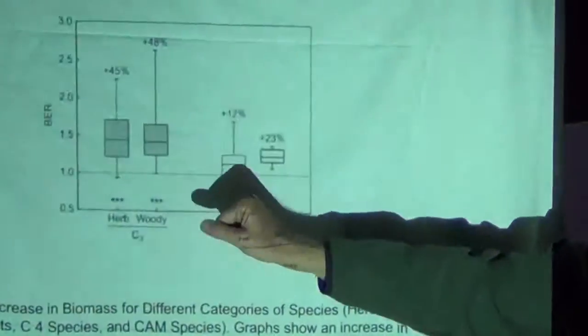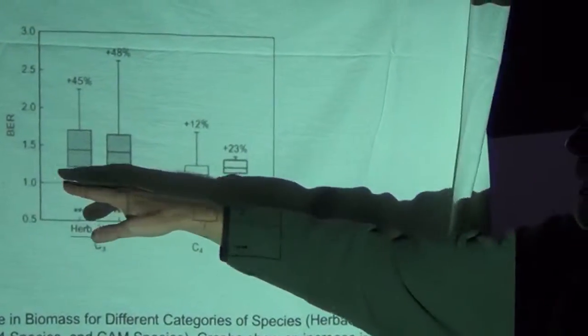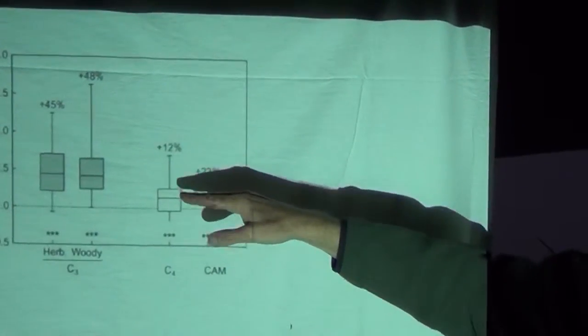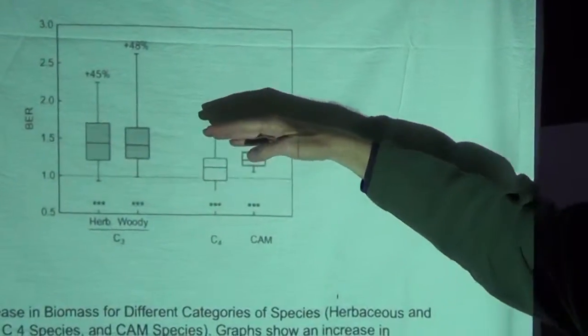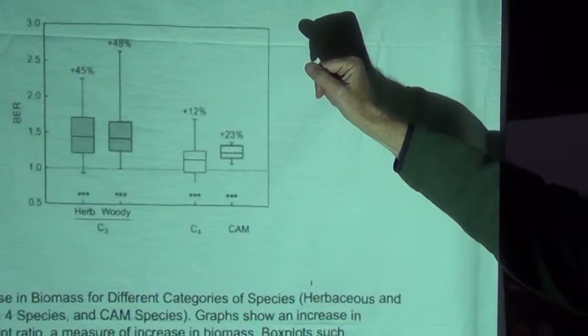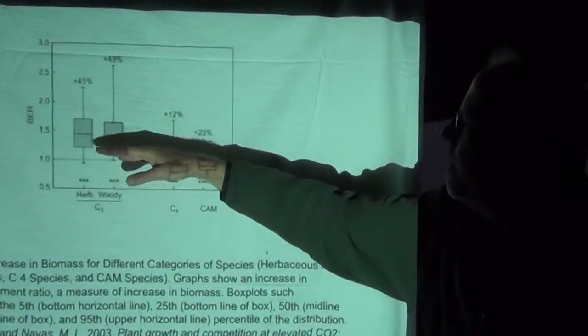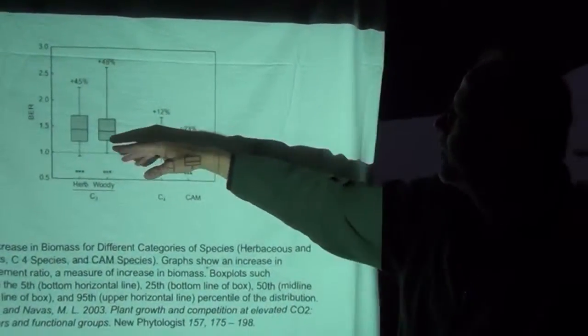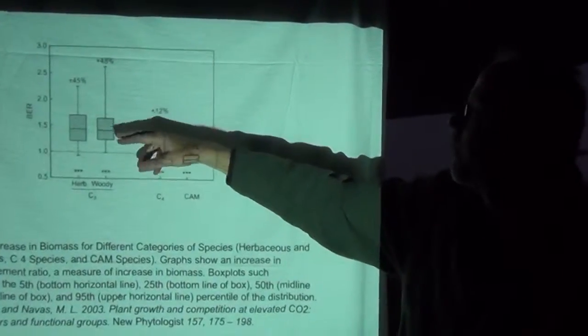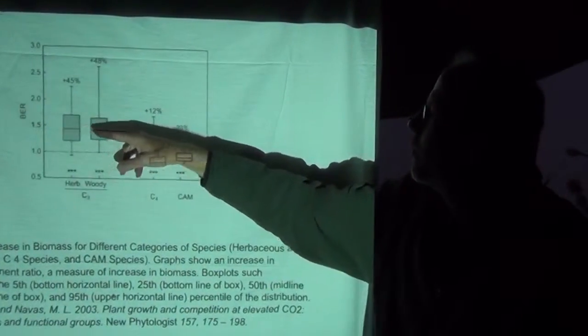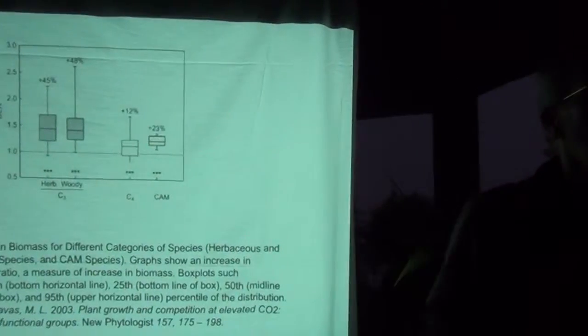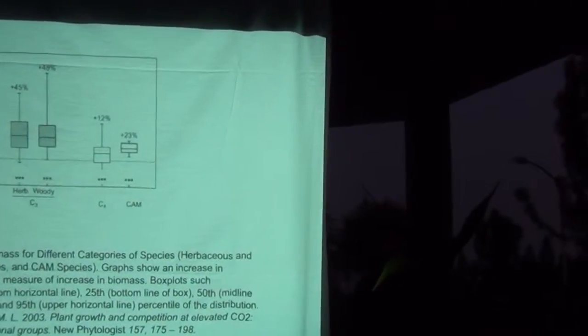The first few experiments we saw were ways to warm things up and see how plants grow. The FACE rings are ways to see how plants respond to increased CO2. In fact, plants do grow faster in both cases. In tightly controlled experimental conditions, you get almost one and a half times as much plant growth as under current conditions.